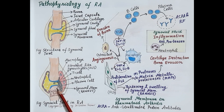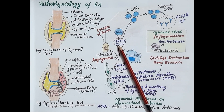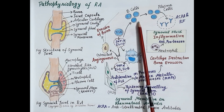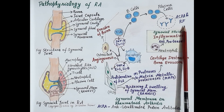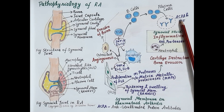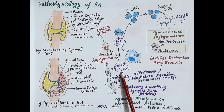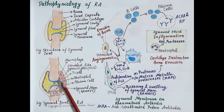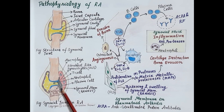Activated T cells release cytokines — inflammatory mediators like interferon gamma and interleukin-17. B cells produce plasma cells, which further produce antibodies namely rheumatoid factor and anti-citrullinated protein antibodies. Macrophages also produce inflammatory cytokines like tumor necrotic factor alpha, interleukin-1, and interleukin-6.